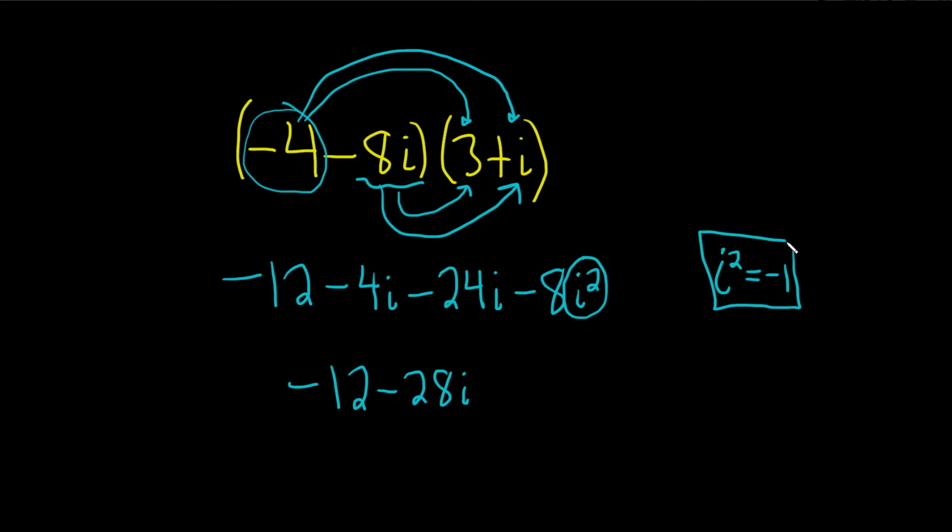This is actually negative 8 times negative 1. The negative and the negative make this positive. Let's rewrite this as negative 12 minus 28i. Then that's going to become a plus 8. Good stuff.